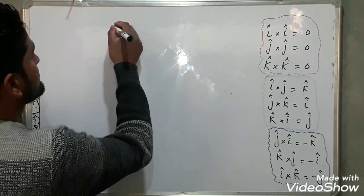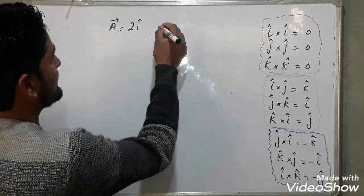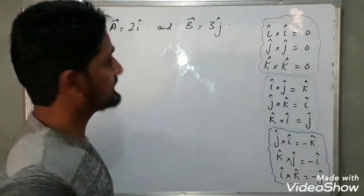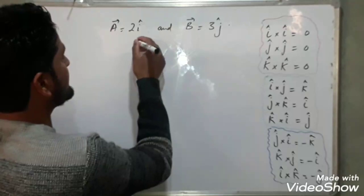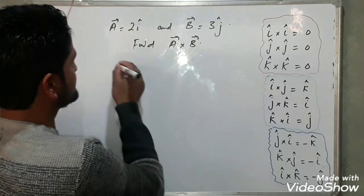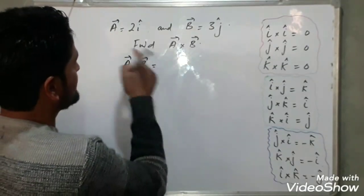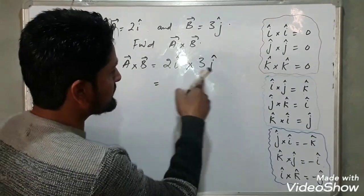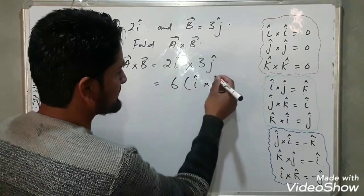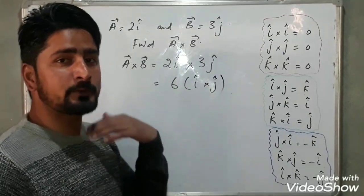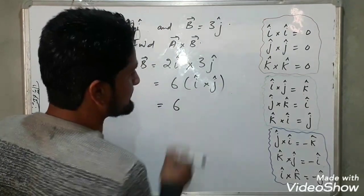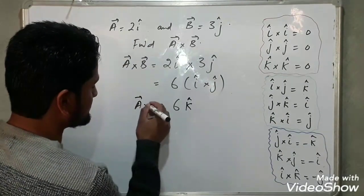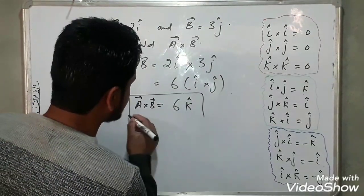Now if vector a equals 2i and vector b equals 3j, find a cross b. So a cross b equals 2i cross 3j, which equals 2 into 3 multiplied by i cross j, that is 6 times i cross j. This cross product of two vectors will produce a vector. Here i cross j equals the third unit vector k, so a cross b equals 6k.